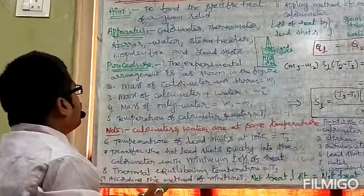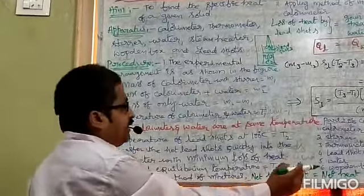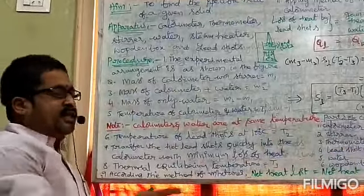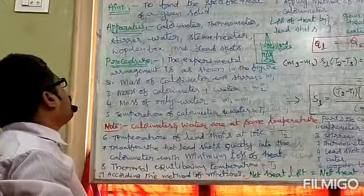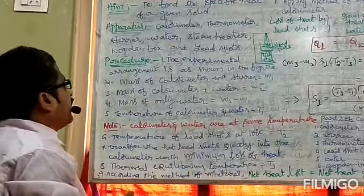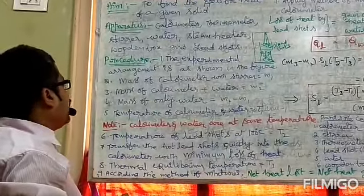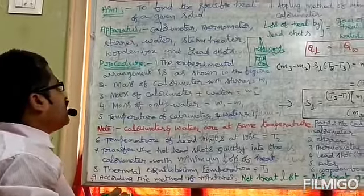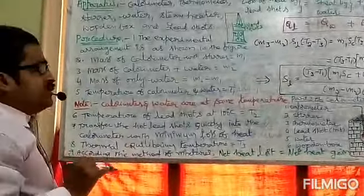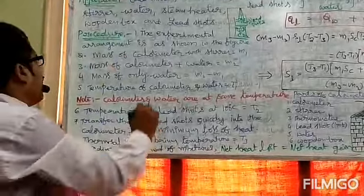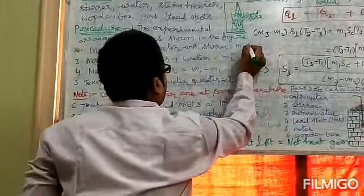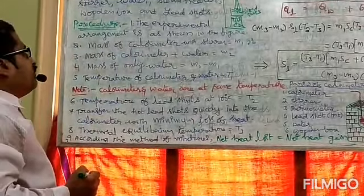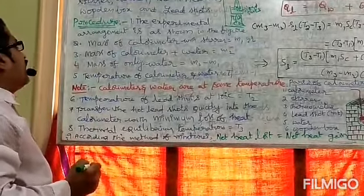Procedure. The experimental arrangement is as shown in the figure. Point number 1: First you have to find out the mass of calorimeter with stirrer. Let the mass of empty calorimeter with stirrer be M1 grams.